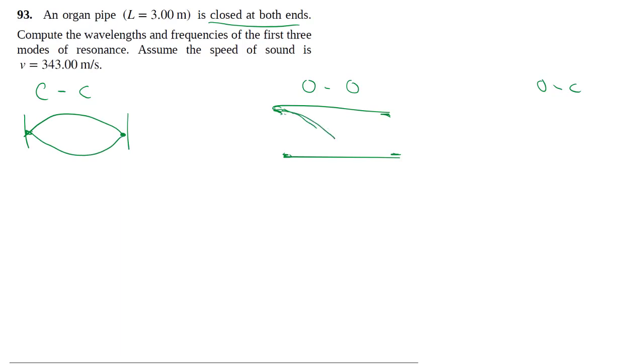open system you have basically two half humps, right? Because it has to be maximum on this side and maximum on this side. As a result, the length here is half the wavelength. Then the next mode, or what we